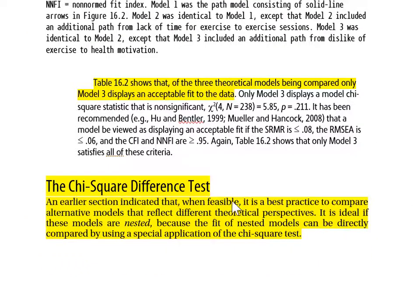Our next topic is a statistical procedure used in evaluating models: determining whether adding new paths results in statistically significant improvements in model fit. This procedure is the chi-square difference test, which will be covered in Part Four. This is the end of Part Three.